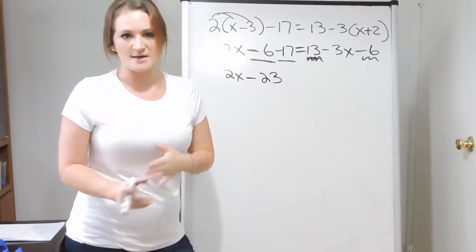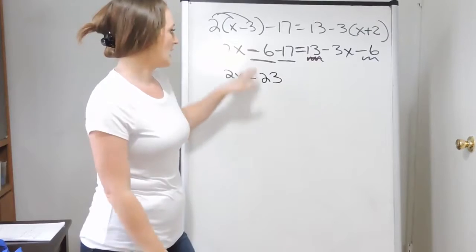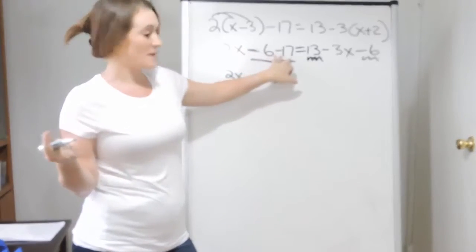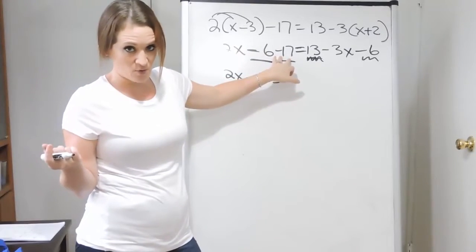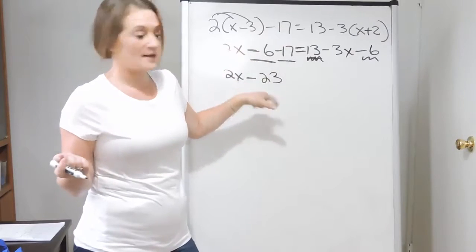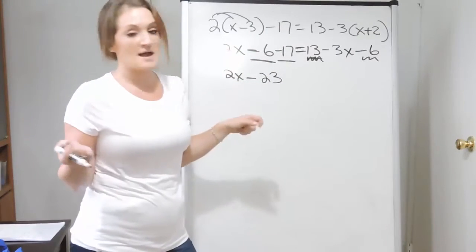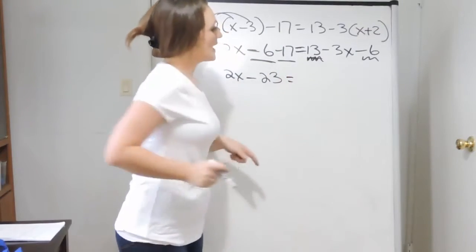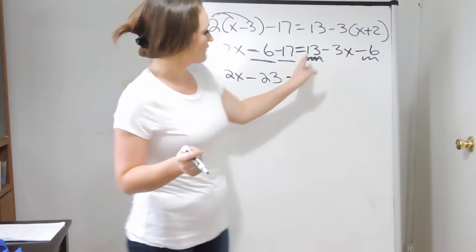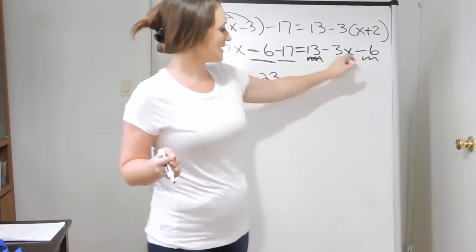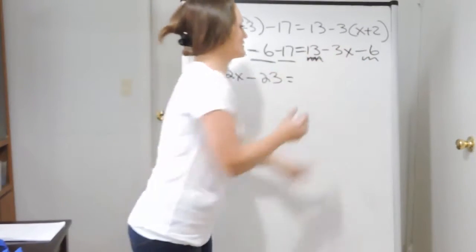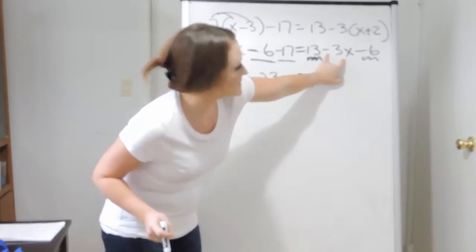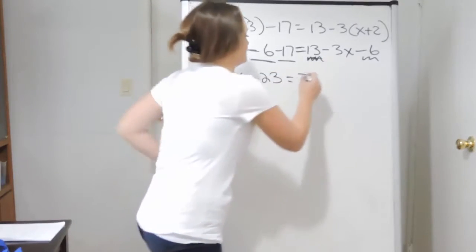After the distributive property, we need to combine like terms. On the left-hand side, we have a minus 6 minus 17 — think of it in terms of money: if you're negative 6 dollars and you spend 17 more, you're further down, so negative 23. On the right-hand side, 13 minus 6 is 7, then drop down the minus 3x.